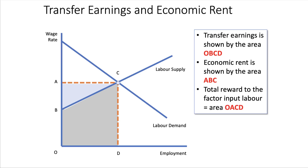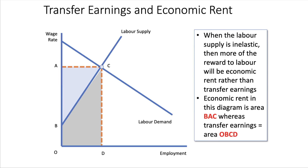Some boards require you to understand transfer earnings and economic rent. Transfer earnings is the minimum earnings that labour requires to remain in an occupation — the area underneath the labour supply curve, shown by area O, B, C, D. Economic rent is the wage above the minimum people would need to be in a certain occupation — the area above the labour supply curve and below the wage, equal to area A, B, C. The total factor reward is the wage times employment, O, A, C, D. When labour supply is relatively inelastic, most of the reward to labour will be rent rather than transfer earnings — boards like OCR tend to include these kinds of questions.